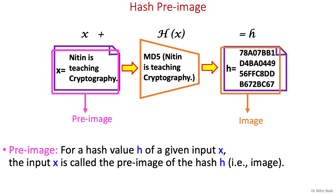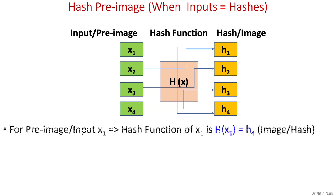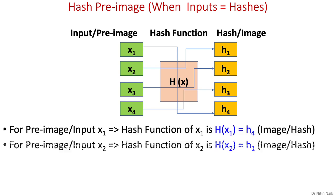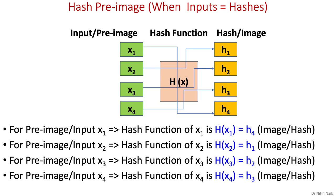Now we'll try to understand hash pre-image in more detail. Let's assume the number of inputs equals the number of hashes — which is not the case in practice, but it will help us understand the concept. Here we have 4 inputs and 4 hashes equal in size, so each input is mapped to one hash: x1 maps to h4, x2 maps to h1, x3 maps to h2, and x4 maps to h3. This illustrates 1-to-1 mapping of an input or pre-image to a hash or image.